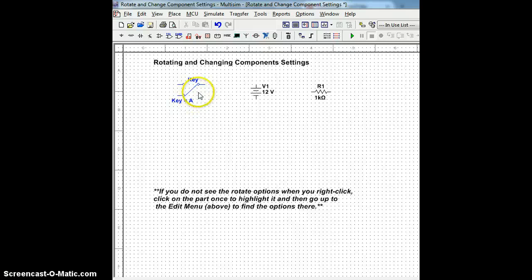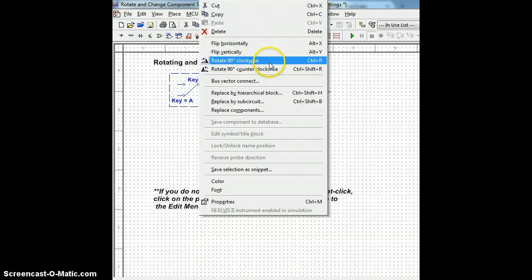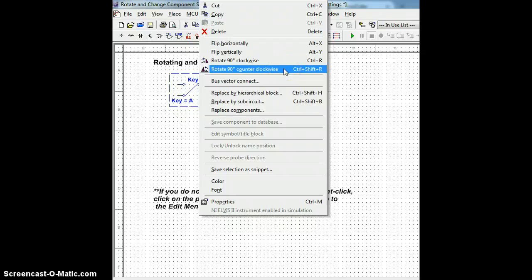If I'd like to rotate the part, I can also right-click on the part itself, and it can be flipped horizontally, vertically, rotated 90 degrees clockwise or counter-clockwise.